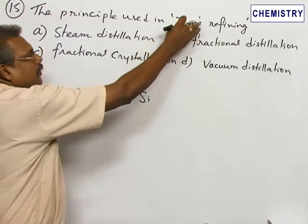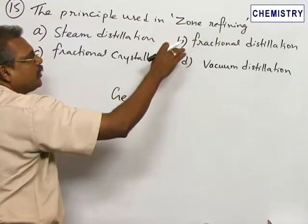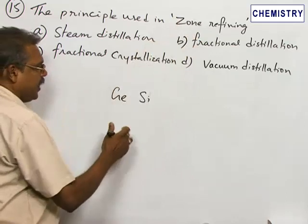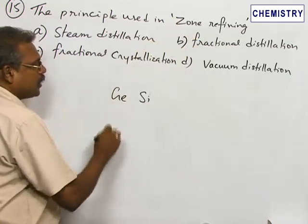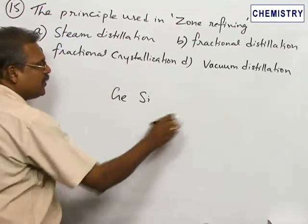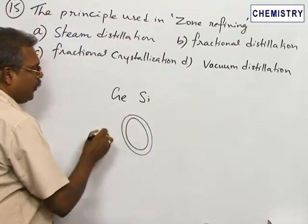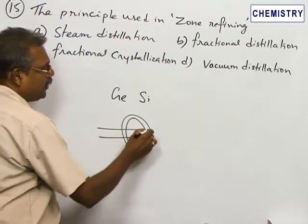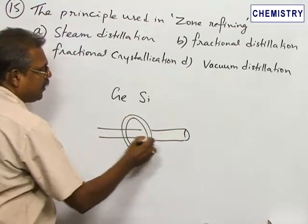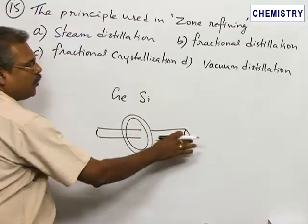A movable circular coil through which the impure rod is inserted like this, and the coil can be moved here and there. First we have to start the coil from one end. When the heating coil is at this end, the pure metal dissolves first and the impurities go along with the melt.